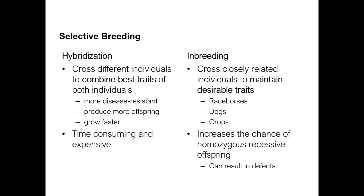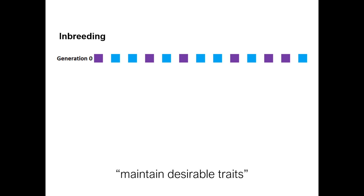The problem with inbreeding is that every time you inbreed the organisms, you increase the chance of developing a homozygous recessive offspring. That homozygous recessiveness might be for a trait that could be bad — for example, colorblindness or some type of defect. Normally individuals will have an extra copy, but if you keep inbreeding, that extra copy might breed out and you'll be left with a defective gene.